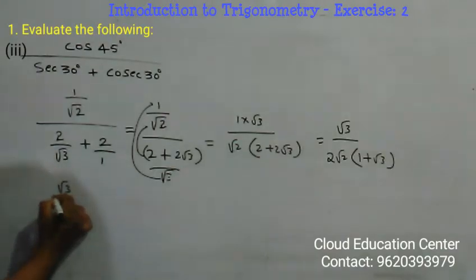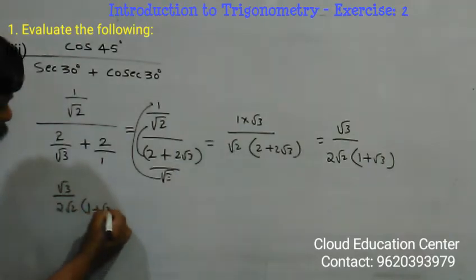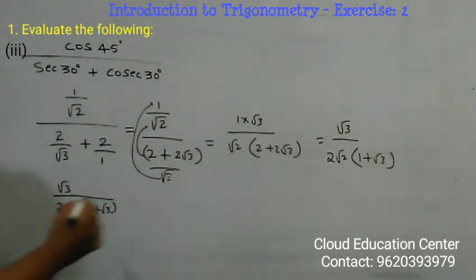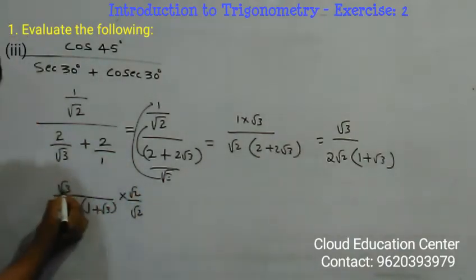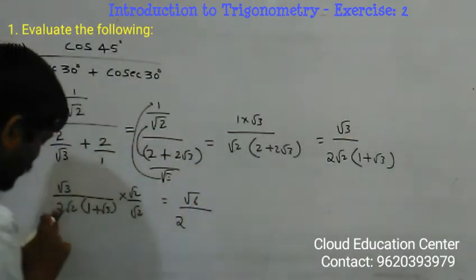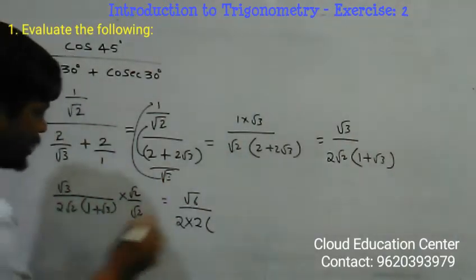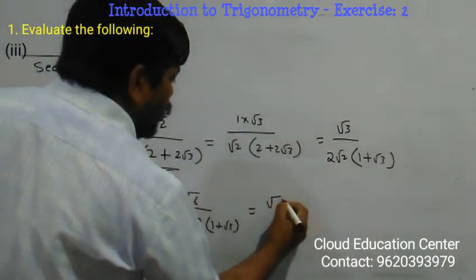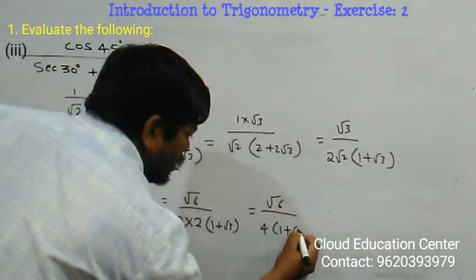We got: root 3 by 2 root 2 into 1 plus root 3. Since root 2 is there, rationalize first with root 2 by root 2. Root 3 into root 2 is nothing but root 6 here. Root 2 into root 2 is 2, and it is 1 plus root 3.